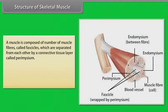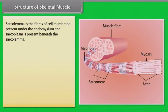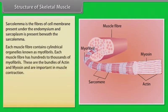A muscle is composed of a number of muscle fibers called fascicles, which are separated from each other by a connective tissue layer called perimysium. Endomysium is connective tissue that separates individual muscle fibers from each other. Sarcolemma is the cell membrane of the fiber, present under the endomysium, and sarcoplasm is present beneath the sarcolemma.